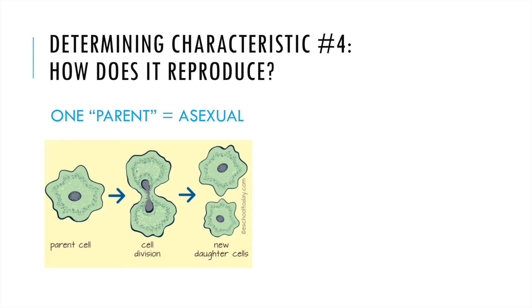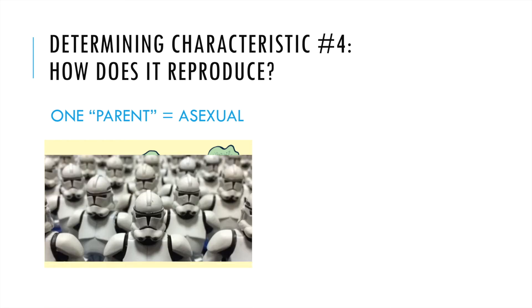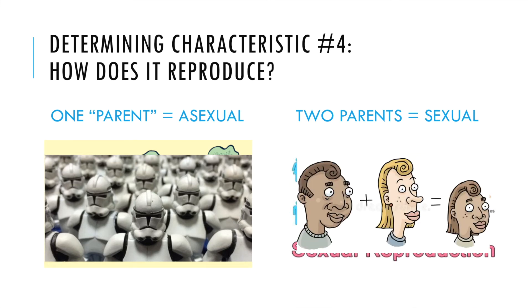The last characteristic we're going to look at is how organisms reproduce. One of the characteristics of life is the ability to reproduce, and organisms can reproduce in two different ways. The first way is asexually — in asexual reproduction there's only one parent, and that parent can split itself and make two identical offspring cells. I like to think of asexual reproduction as cloning the parent. The next type is sexual reproduction, where two parents combine their DNA to make offspring. That's how, in humans, we can have traits similar to both parents but not exactly like either one.